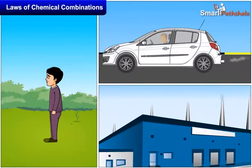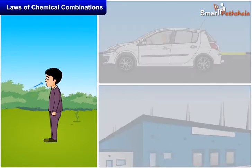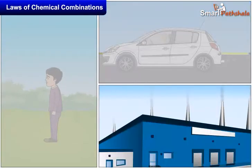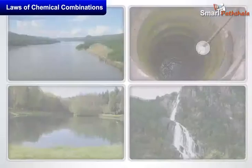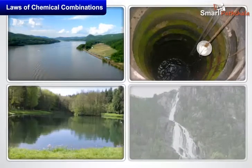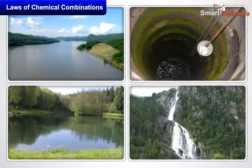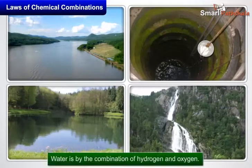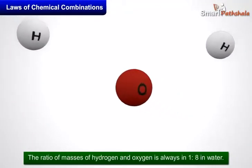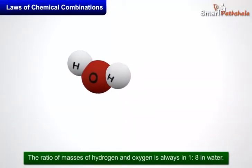such as carbon dioxide released from our mouth, vehicles, factories, etc. Similarly, in river, well, or pond water, or water released from mountains, water is the combination of hydrogen and oxygen. The ratio of masses of hydrogen and oxygen is always 1:8 in water.